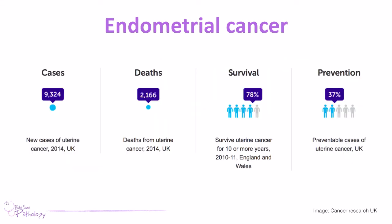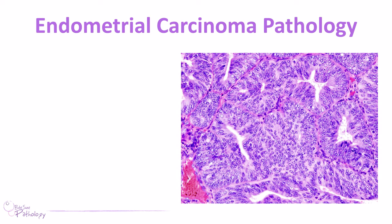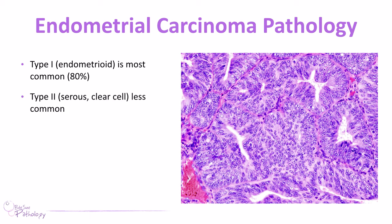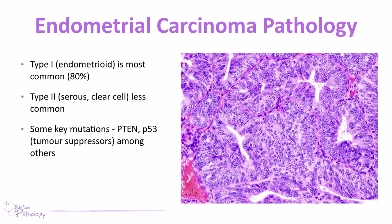Endometrial cancer is not uncommon, but it currently has fairly good survival rates — about 78% of patients survive for 10 years or more, though a significant number of cases are preventable. The most common type is type 1, known as the endometrioid form. Type 2 is serous or clear cell and is less common. Key mutations in endometrial cancers relate to tumour suppressors including PTEN and p53, among others.